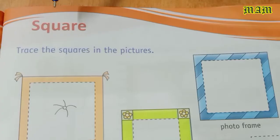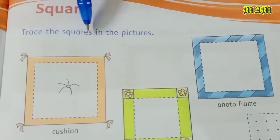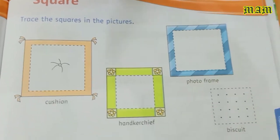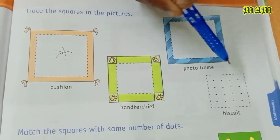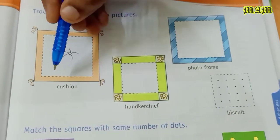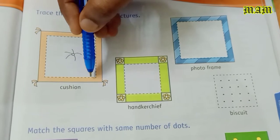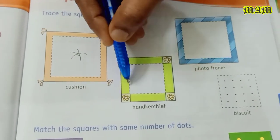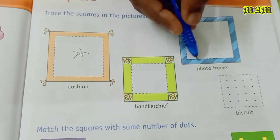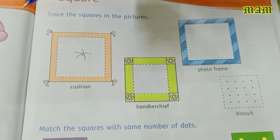Next page, page number 61. Square. Trace the squares in the pictures. First one: cushion, photo frame, biscuit. This square, next picture square.